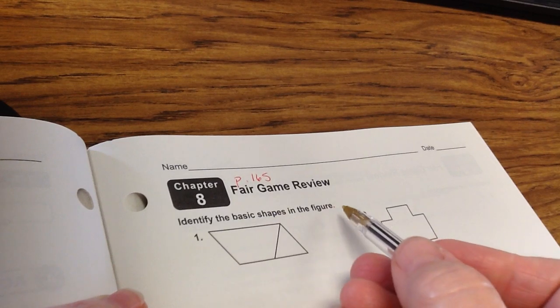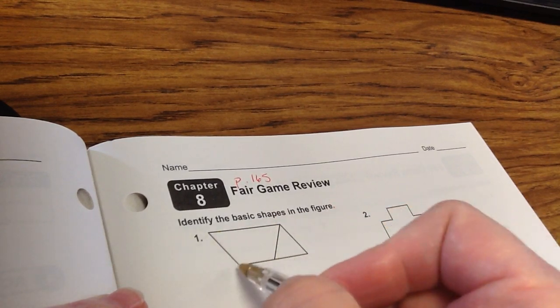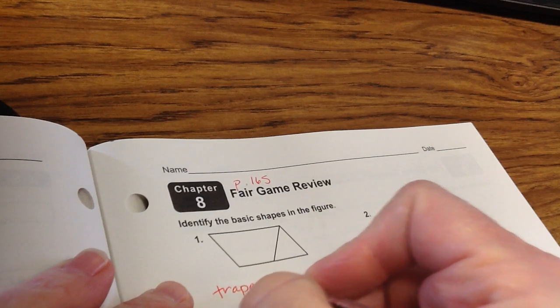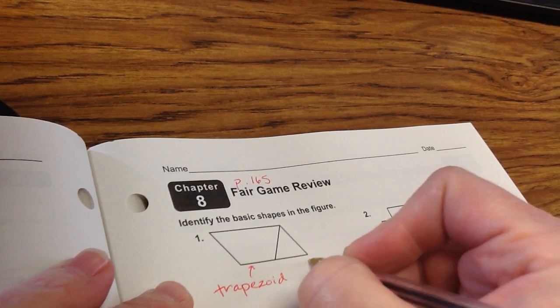Identify the basic shapes in the figure. So you can see here that this is a trapezoid, so you're just going to label it trapezoid, and this is a triangle.